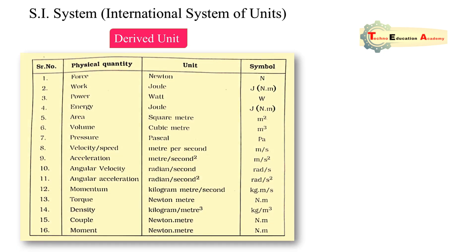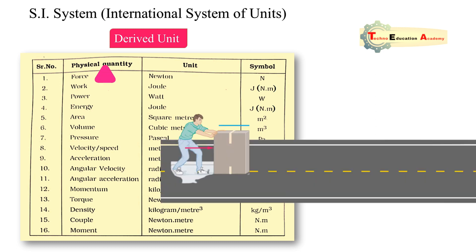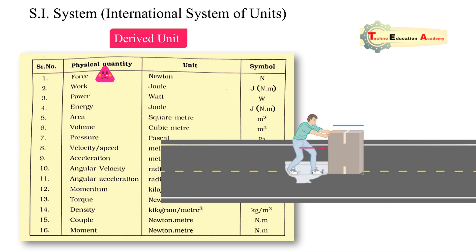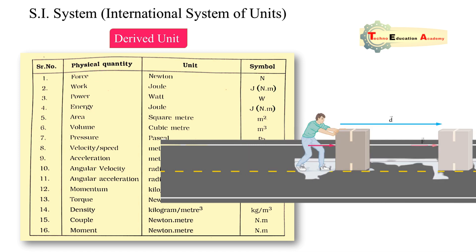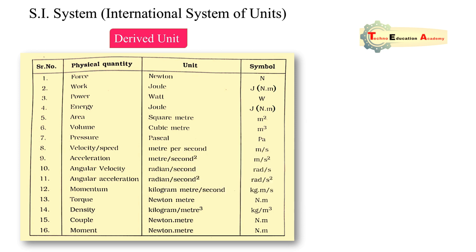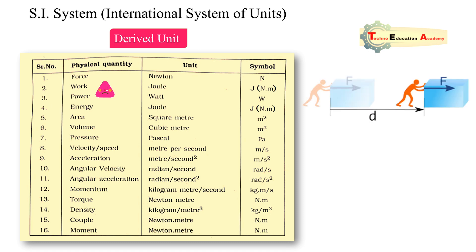Derived units are units derived from fundamental units. The first derived unit is force — force means the external agency due to which a body undergoes motion, and its unit is newton. The second quantity is work — work means force into displacement. Whenever we apply some force on a body and some displacement occurs, it is called work done. There are three definitions of work: the theoretical definition is force into displacement.